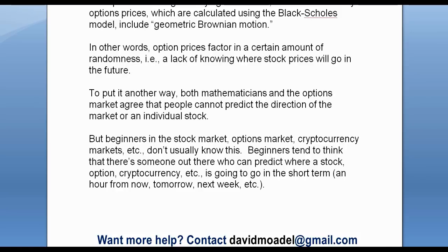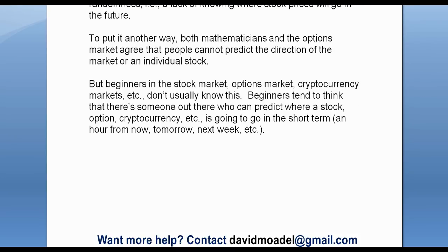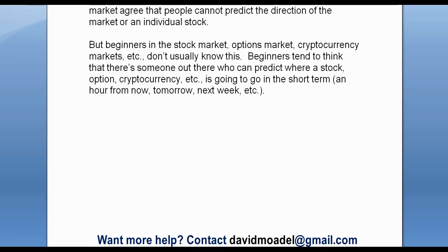To put it another way, both mathematicians and the options market agree that people cannot predict the direction of the market or an individual stock. But beginners in the stock market, options market, cryptocurrency markets, and so on, don't usually know this. Beginners tend to think that there is someone out there who can predict where a stock, option, or cryptocurrency is going to go in the short term — whether it's a minute from now, an hour, tomorrow, next week. So I want you to get out of that beginner mindset. If you believe there's somebody who knows where it's going to go in the next hour, day, or even week, I would recommend that you go back and study Brownian Motion.